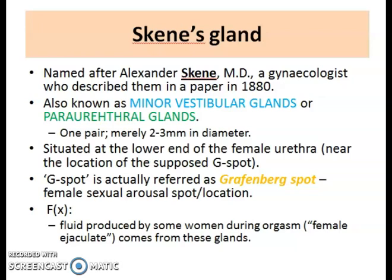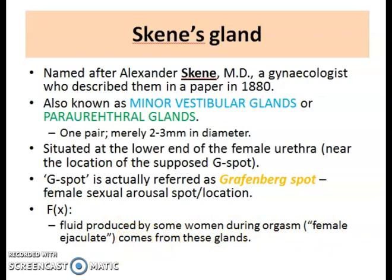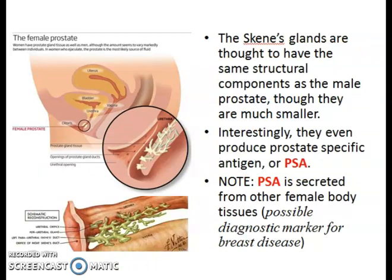Skene's gland, named after gynecologist Alexander Skene who described it in 1880, is also known as the minor vestibular glands or paraurethral glands. They come in a pair, about two to three millimeters in diameter. They are related to the G-spot (Gräfenberg spot) — the female sexual stimulation location. Their main function is to produce fluid during female orgasm. Interestingly, they share structural components with the male prostate and even produce prostate-specific antigen (PSA), which may serve as a diagnostic marker for breast cancer.